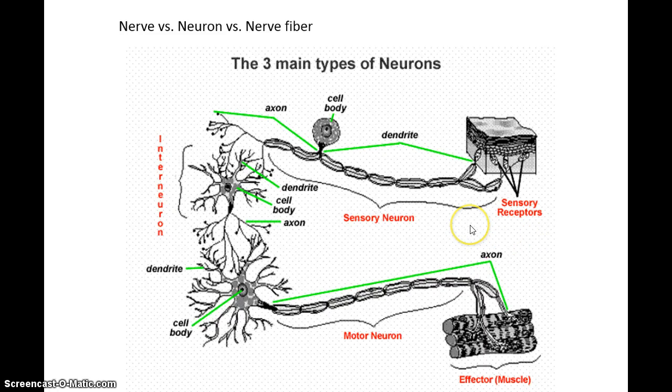So make sure, and this was in the first video, you know the difference between what they do, how they send information. Sensory goes peripheral to central, motor goes central out to peripheral, interneuron is found just in the brain or spinal cord in the central nervous system. And again, you have this difference in the length of the dendrites and the axons.